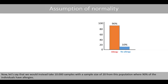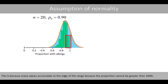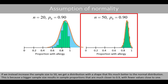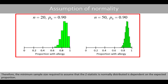Now, if we instead take 10,000 samples of size 20 from a population where 90% of individuals have allergies, the distribution of the 10,000 sample proportions no longer follows a normal distribution. This is because many values accumulate at the edge of the range, since the proportion cannot exceed 100%. If we instead increase the sample size to 50, the distribution fits much better to the normal distribution. Therefore, the minimum sample size required to assume normality is dependent on the expected proportion.